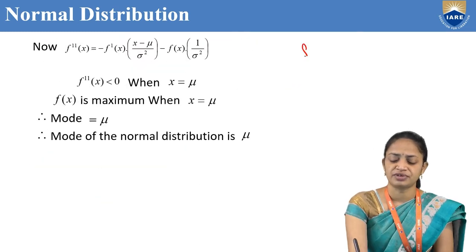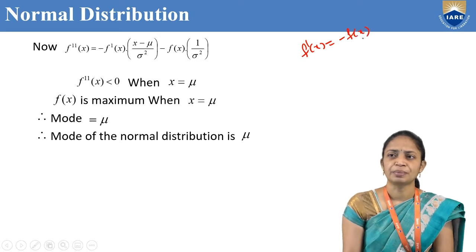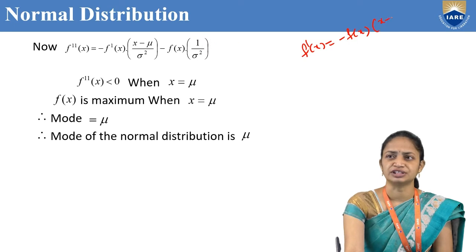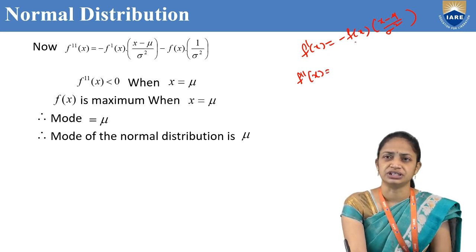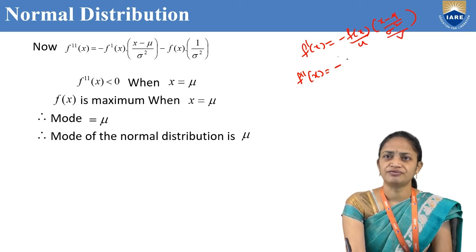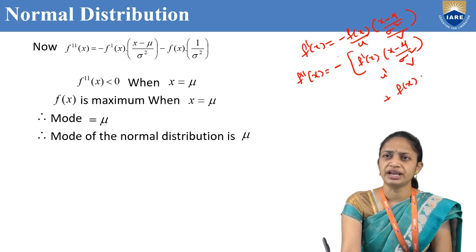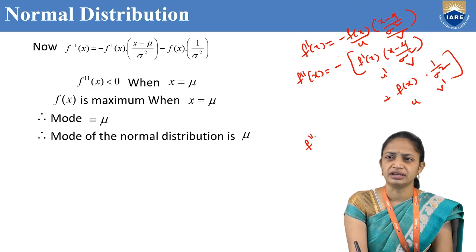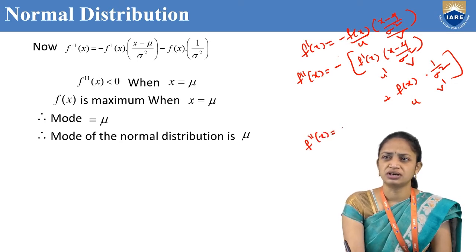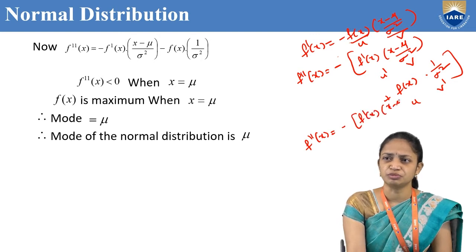Now we need to find F''(x). We have F'(x) = −F(x) · ((x−μ)/σ)². Differentiating again using the product rule, let u = F(x) and v = ((x−μ)/σ)². So F''(x) = minus of [u'v + u·v'], where v' = 1/σ². Simplifying, F''(x) = −[F'(x)·((x−μ)/σ)² + F(x)·(1/σ²)].